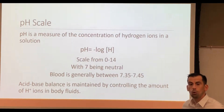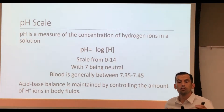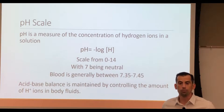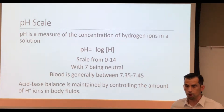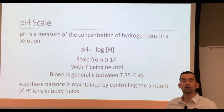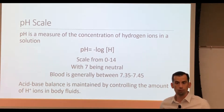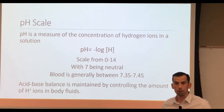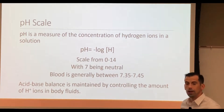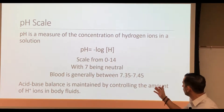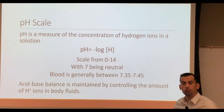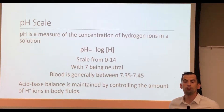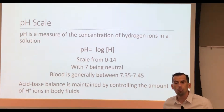The lower the pH recording, the more acidic a solution is, meaning the more free hydrogen ions that are present. The higher the number, the more basic the solution, meaning the fewer free hydrogen ions that are present. 7 is going to be considered a neutral solution. Blood, for our purposes, is going to be measured between a pH of 7.35 and 7.45.